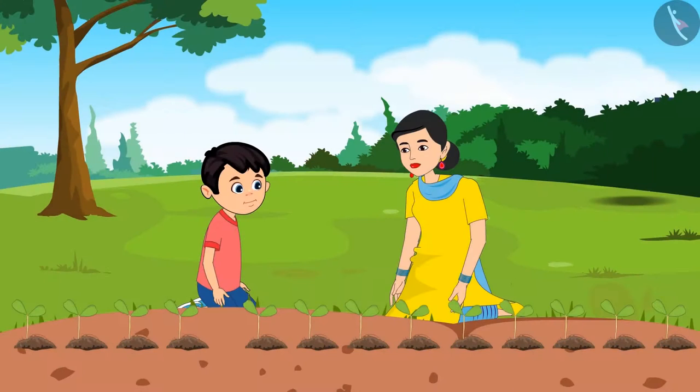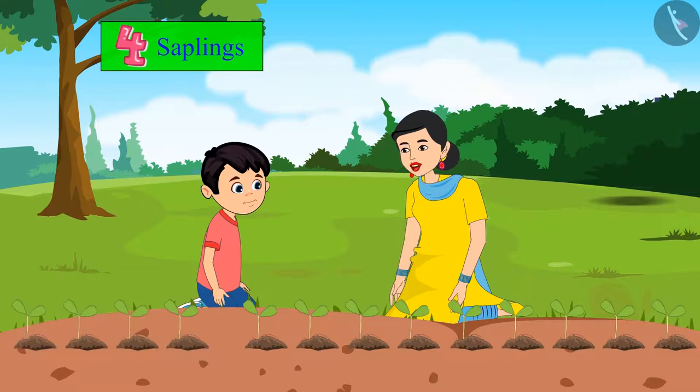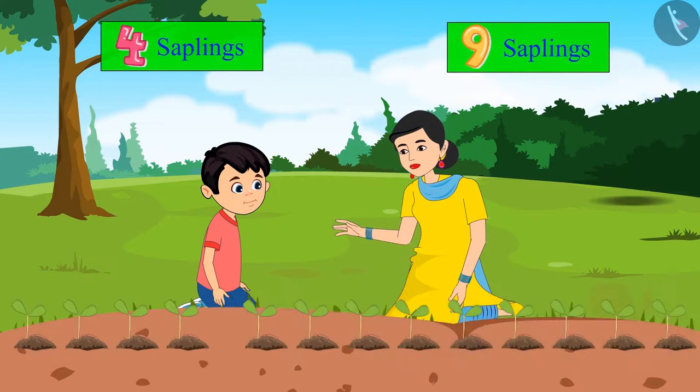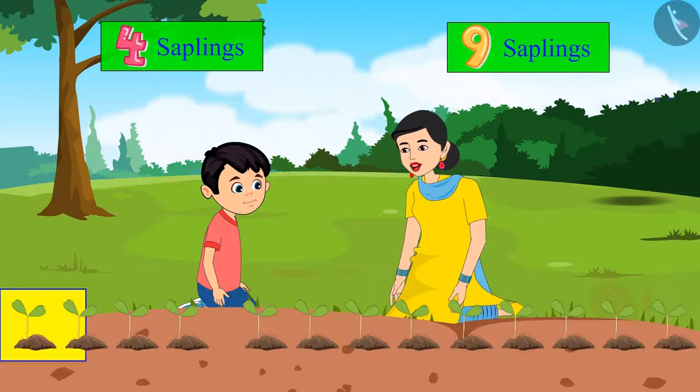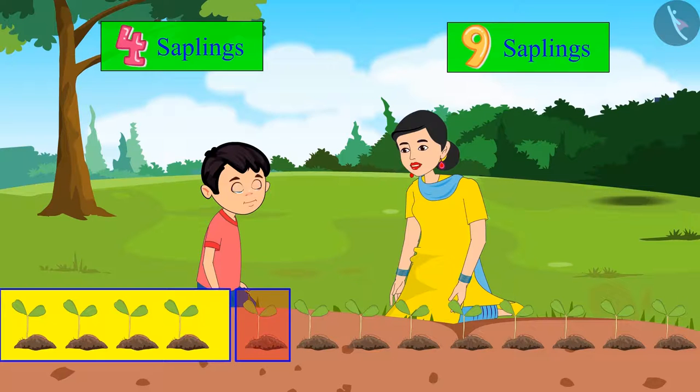No Chotu, not like this. Come on, now let us count the saplings all over again. Look, first of all you planted four saplings. After that I planted nine more saplings. And we already had four, and after four this is the fifth sapling.